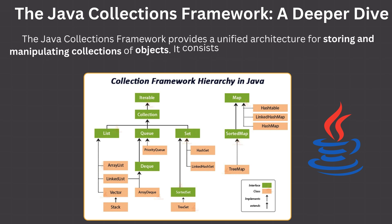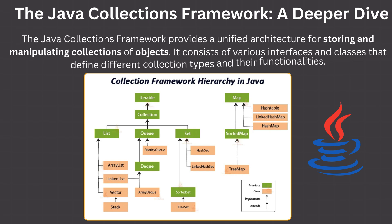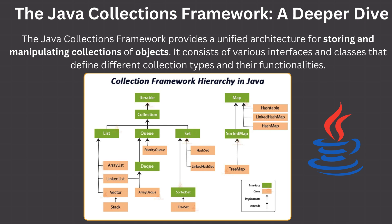The Java Collections Framework: A Deeper Dive. The Java Collections Framework provides a unified architecture for storing and manipulating collections of objects. It consists of various interfaces and classes that define different collection types and their functionalities.